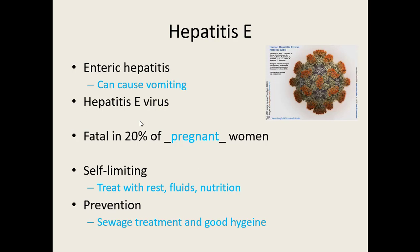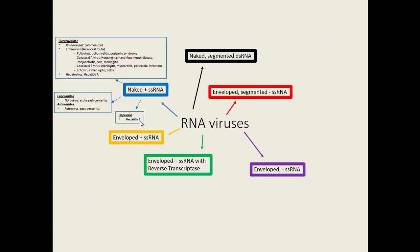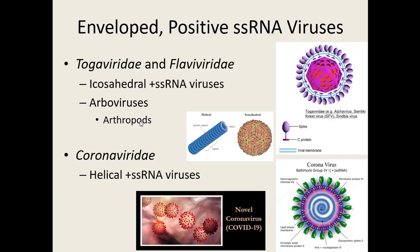Moving on to enveloped single-stranded RNA viruses, we have two groups: the Togaviridae and the Flaviviridae, which are discussed together because of their capsid shape — icosahedral. Many of them are arboviruses, meaning they're spread by arthropods or biting insects like mosquitoes, ticks, flies, and mites. The Coronaviridae group has a helical interior structure, and that's where this first recording will wrap up.